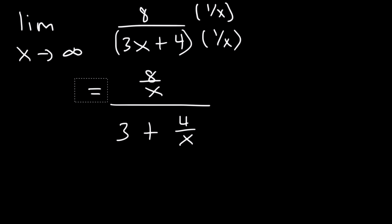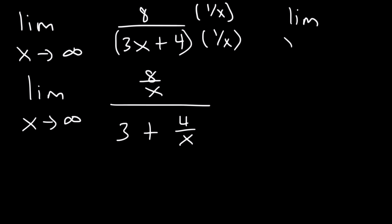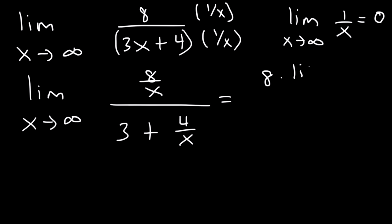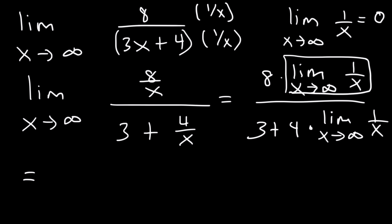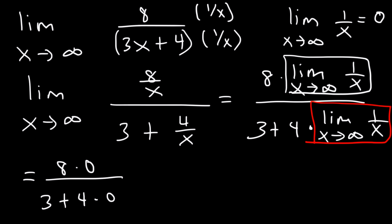Now we can apply the limit as x approaches infinity to every term in this fraction. Recall that a fraction like 1 over x turns into 0 — the limit as x approaches infinity for 1 over x is 0. We can rewrite this as 8 times the limit as x approaches infinity of 1 over x, over 3 plus 4 times the limit as x approaches infinity of 1 over x. So it's going to be 8 times 0 divided by 3 plus 4 times 0, which is 0 over 3. The whole thing is 0.